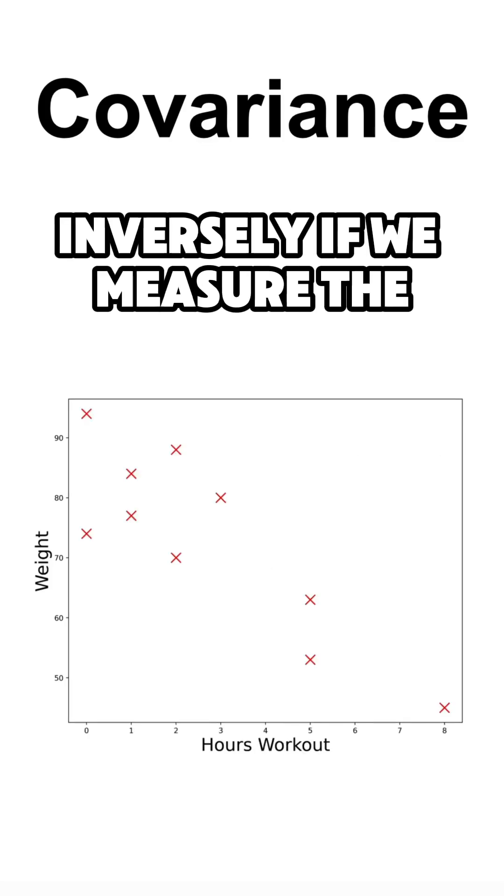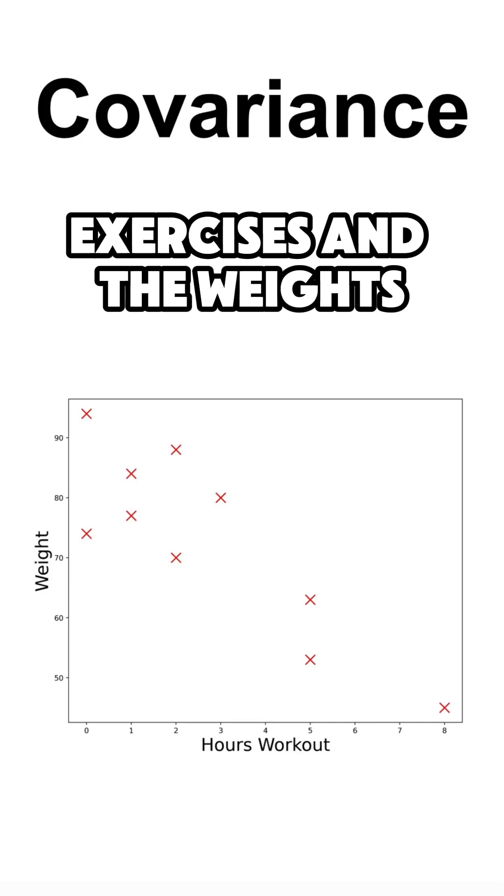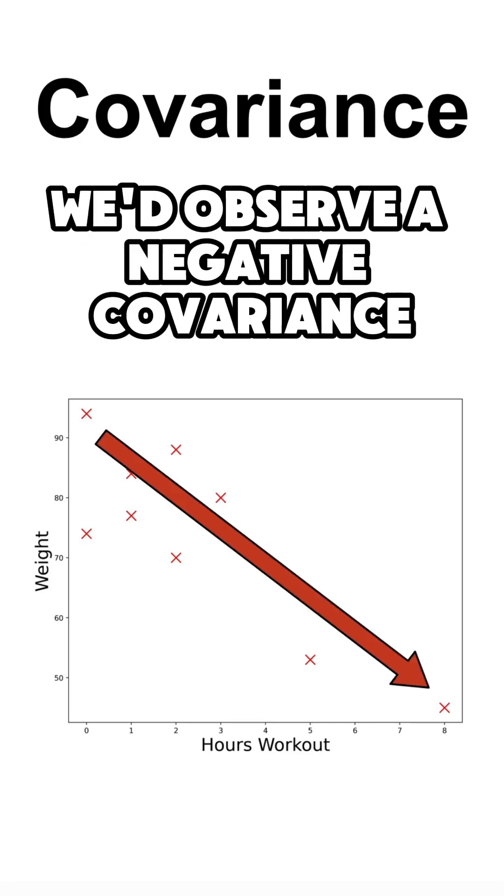Inversely, if we measure the covariance between the number of hours a person exercises and the weight, we would observe a negative covariance.